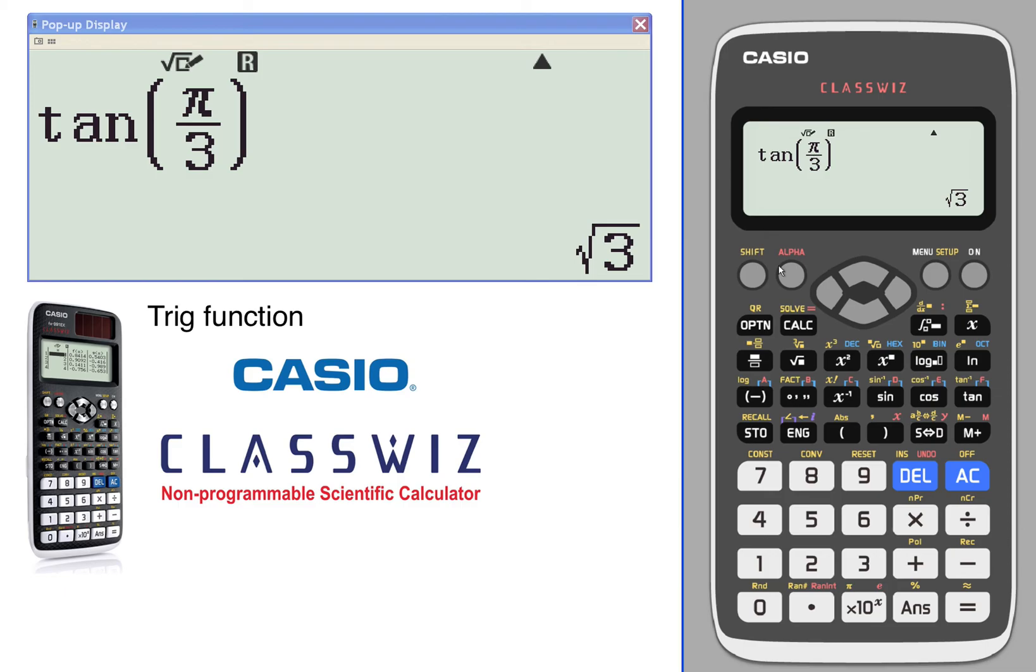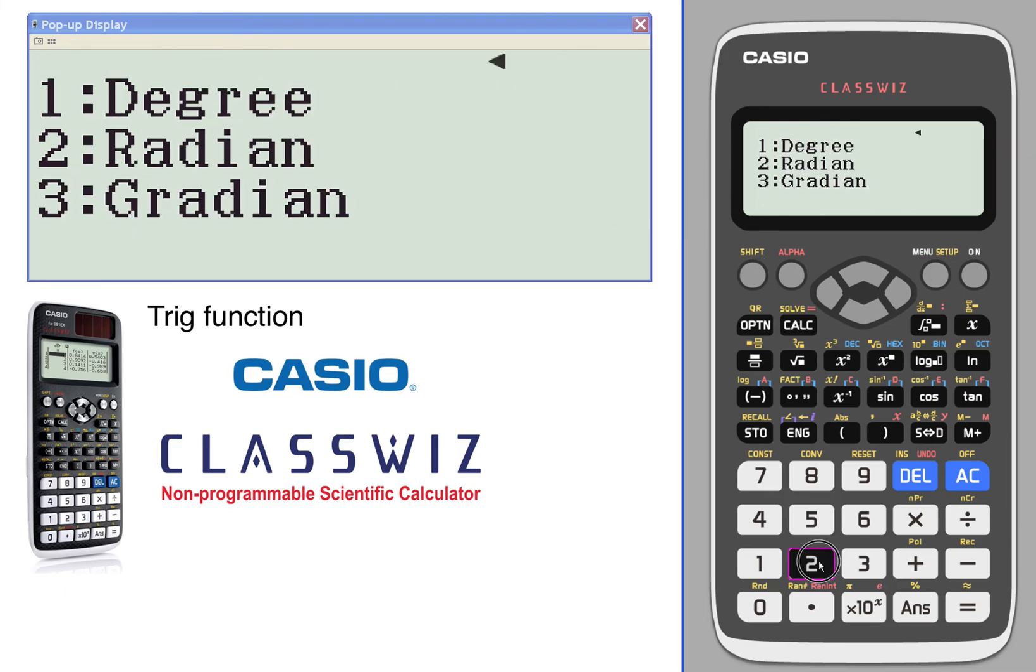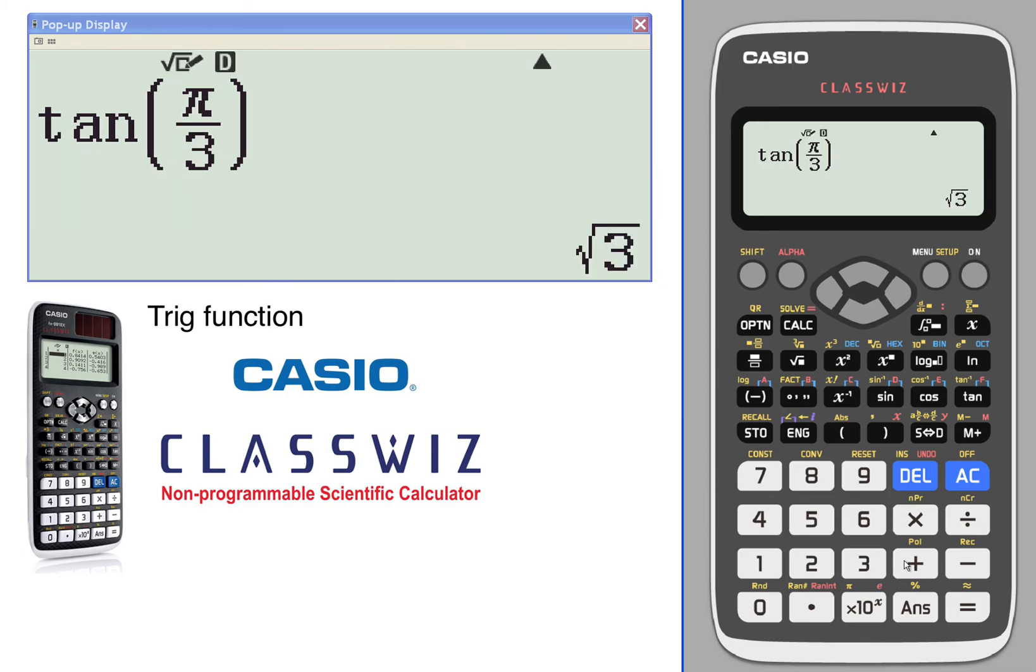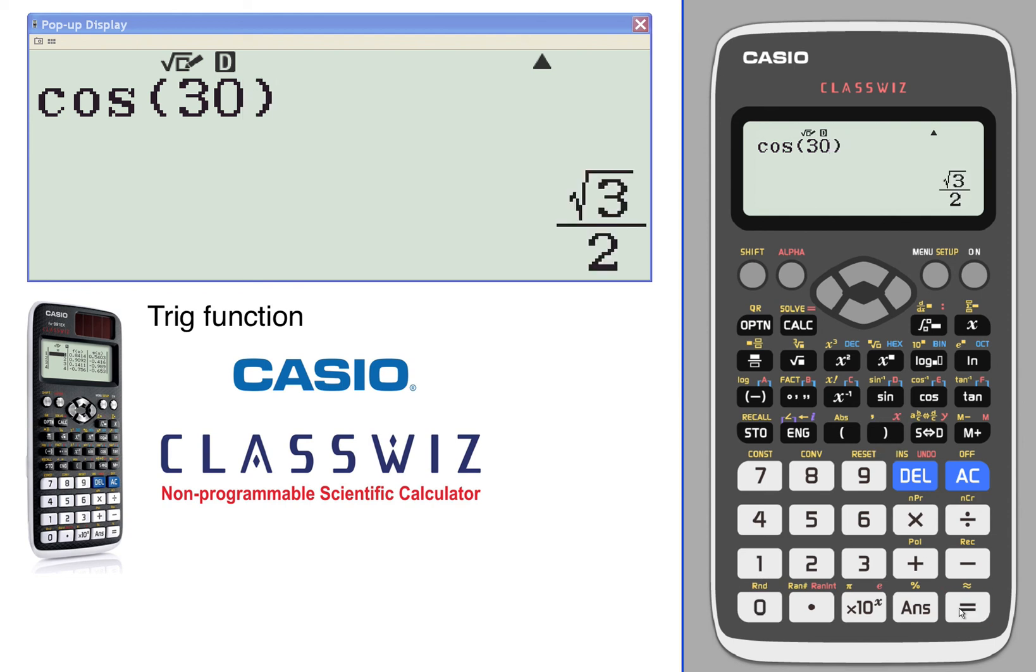Now we'll change the mode of the angle. So we want to go now into degree mode, so that we do something like the sine of 30. The cosine of 30. And the tangent of 30 degrees.